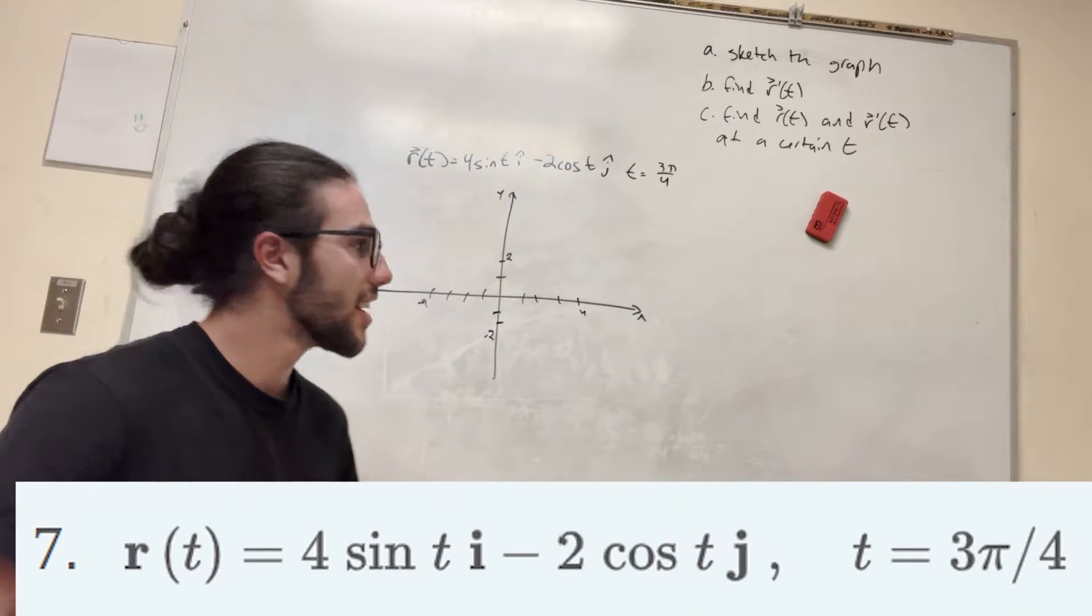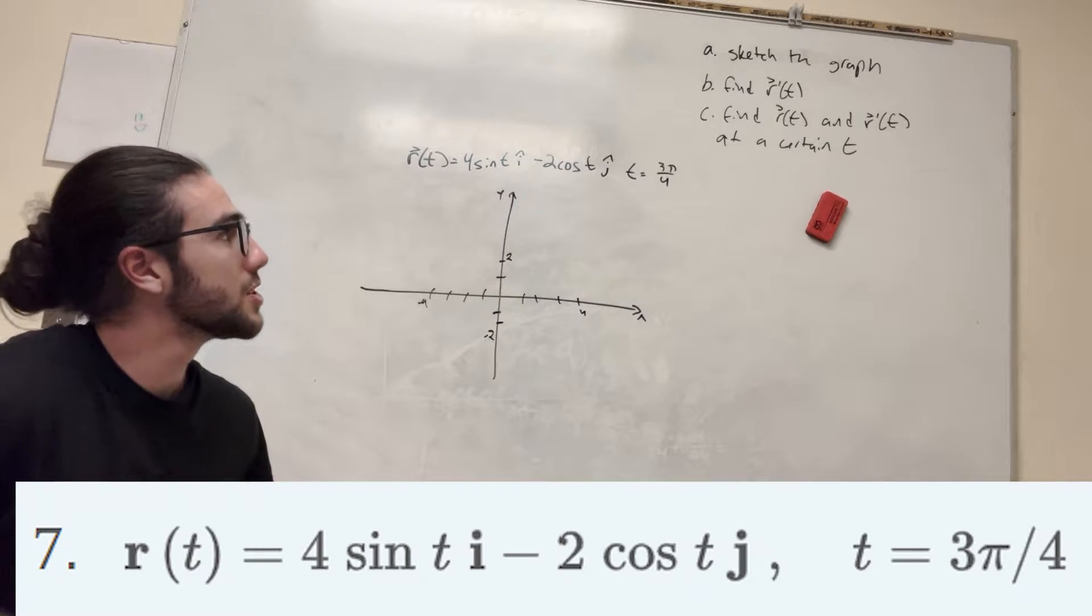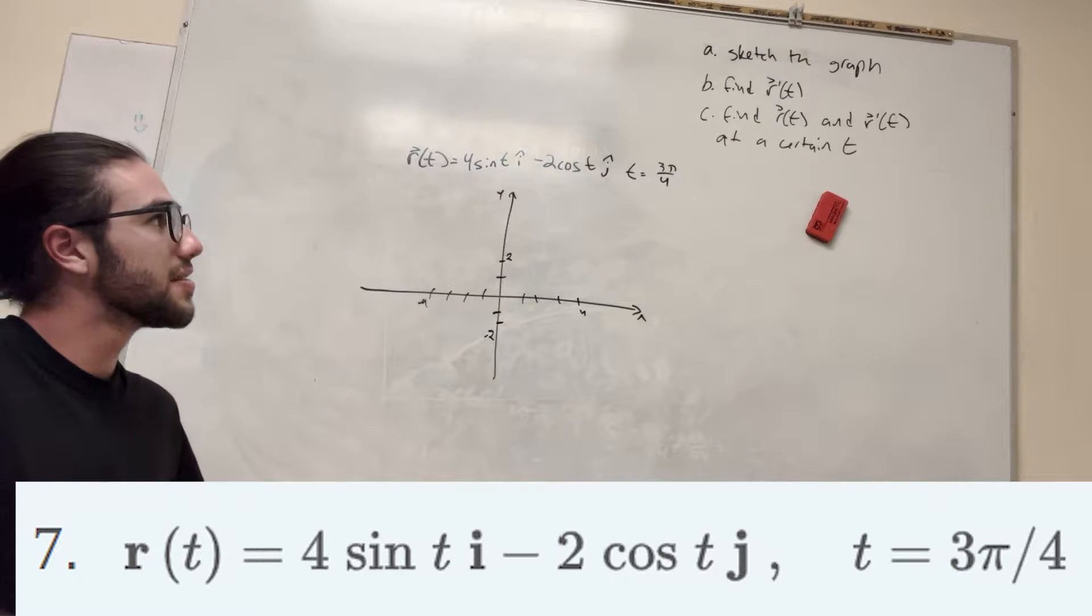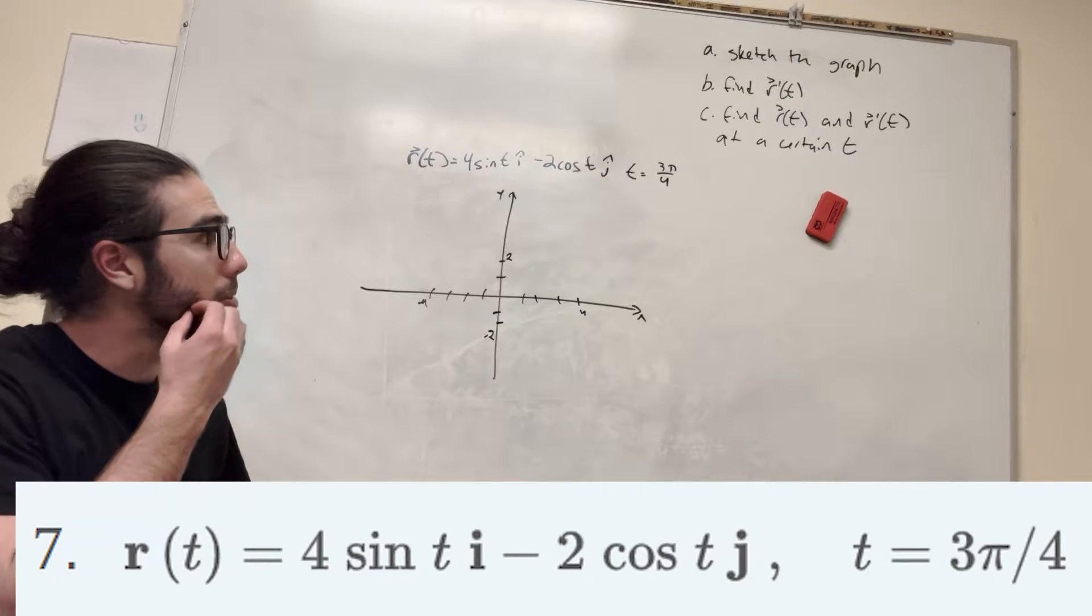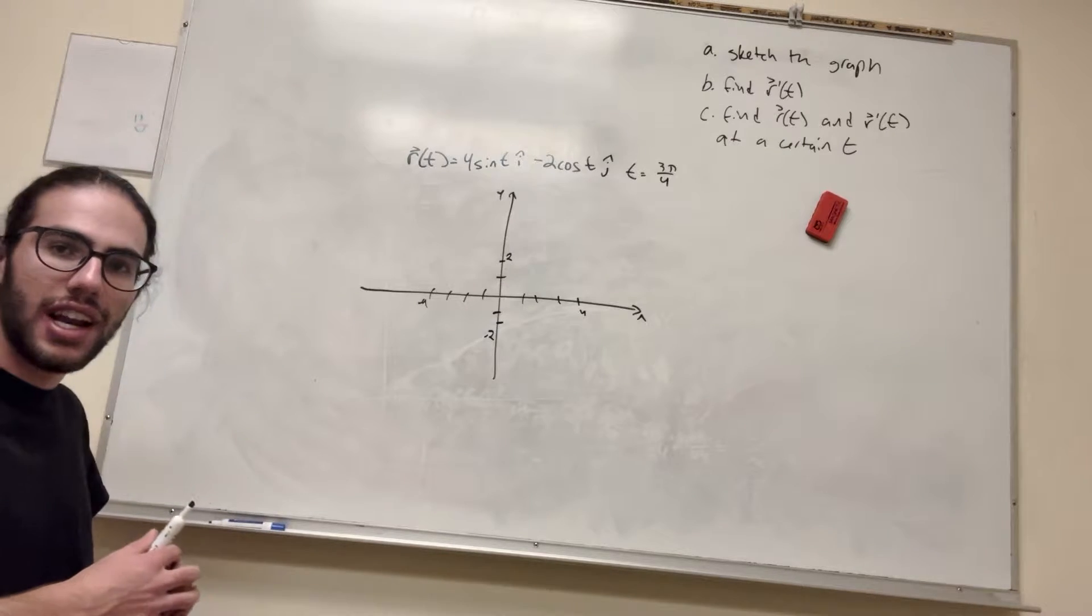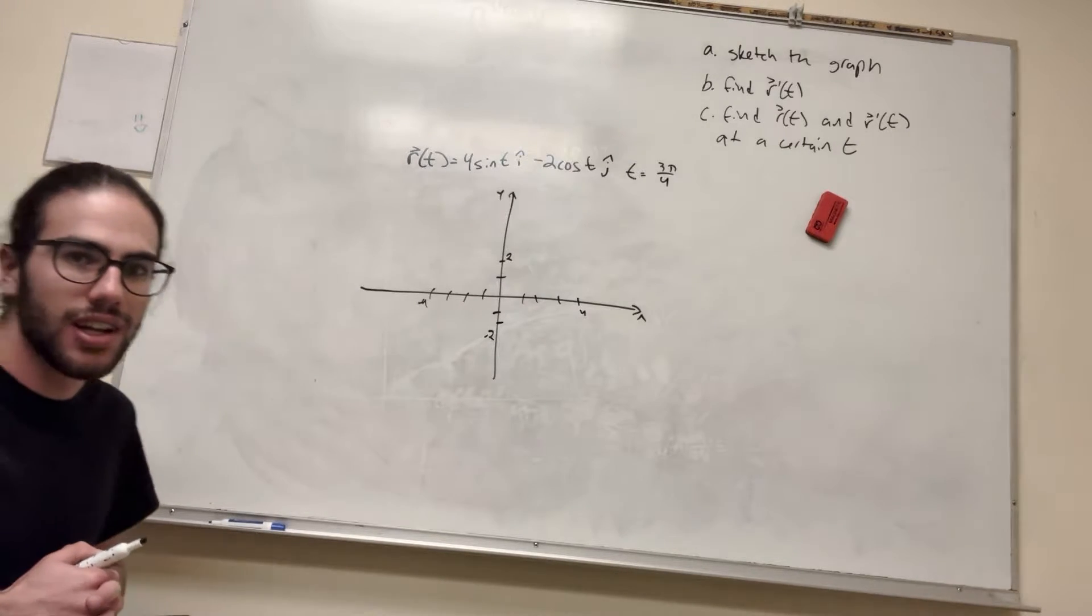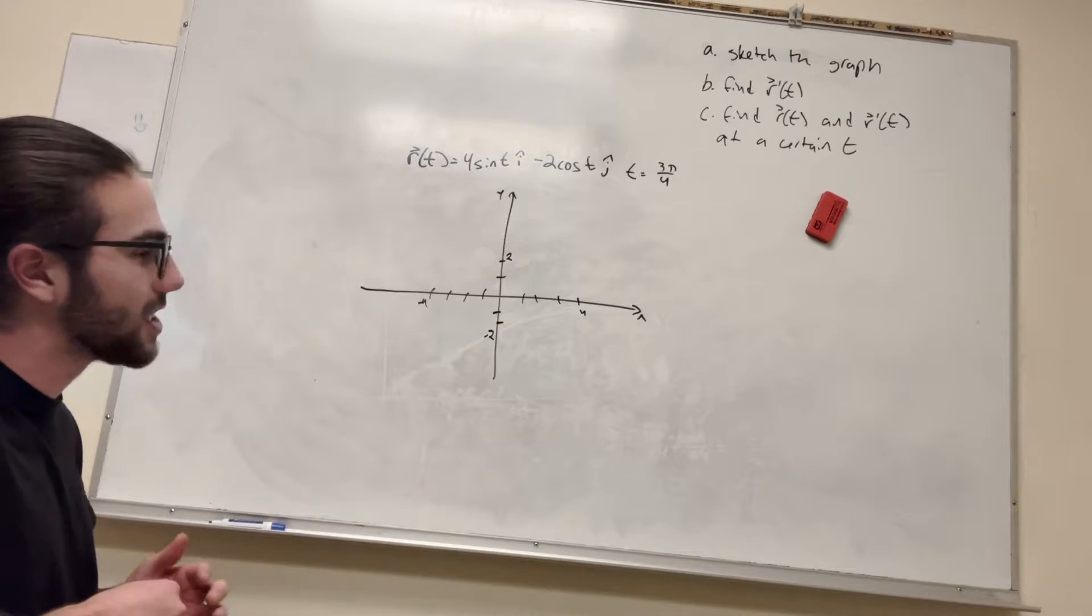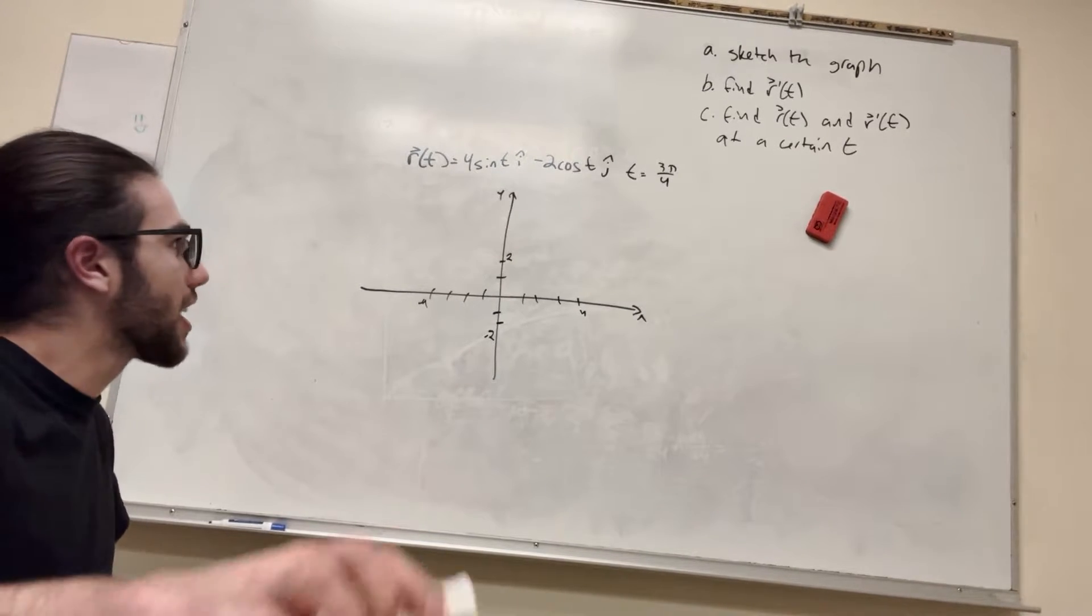What's up, Pyeong gang? Alright, so we have to sketch a graph of a function of t, find r of t, and find r prime of t, and it wants us to find it at a certain point, which is at 3π over 4. So what I like to do is I want to get a good image of what's going on with this, and basically what to do is I just have to plug in points of t.